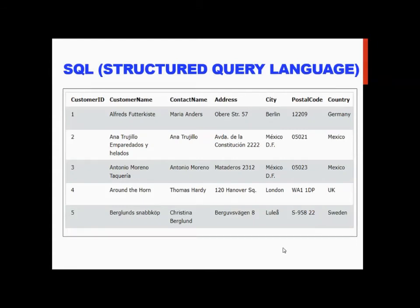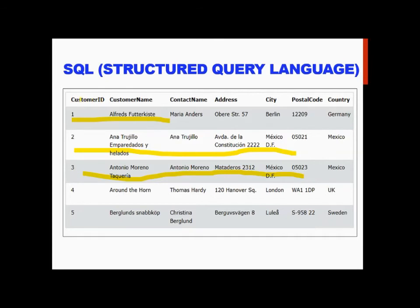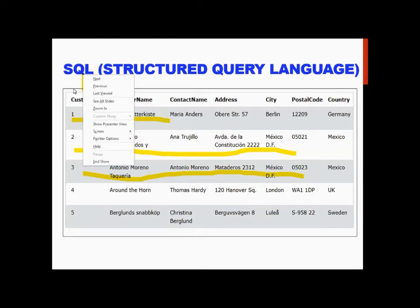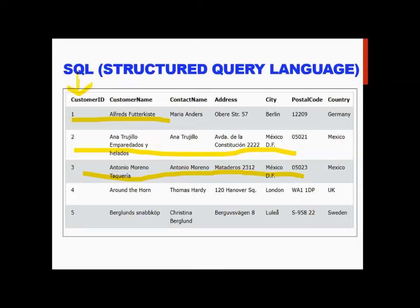This is an example of a table. The table contains rows and columns. The column names are: CustomerID, CustomerName, ContactName, Address, City, PostalCode, and Country. These are the names of the columns in the table.